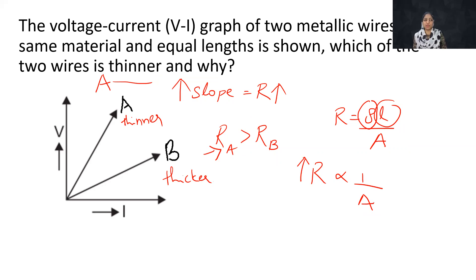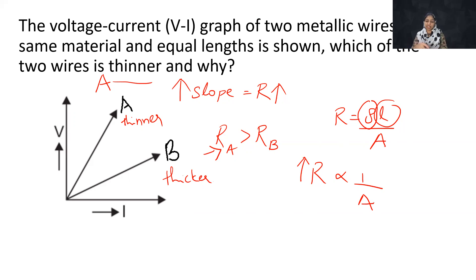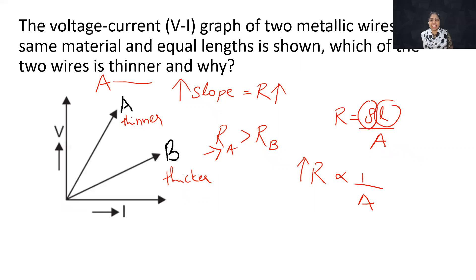We discussed these questions about the V-I graph. The slope equals resistance, and from that we can talk about heat, thickness, and temperature. If you have questions about the V-I graph, this video will help you answer them. If you like this, please comment with your feedback and suggestions. Thank you so much for watching today's video — have a wonderful day ahead. Bye, take care!